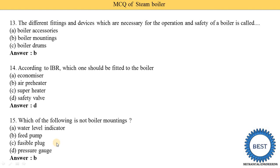There are eight types of mountings: safety valve, water level indicator, pressure gauge, steam stop valve, feed check valve, blow-off cock, manhole, and mudhole. If you want to study all mountings in detail, the link is provided in the card and in the description for the full chapter on boilers.